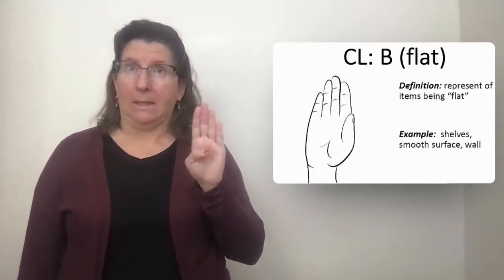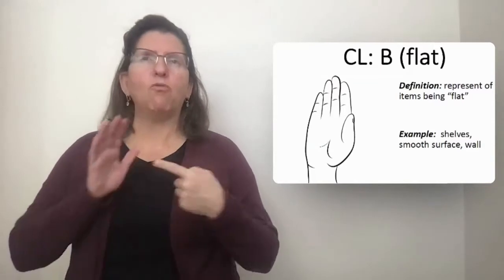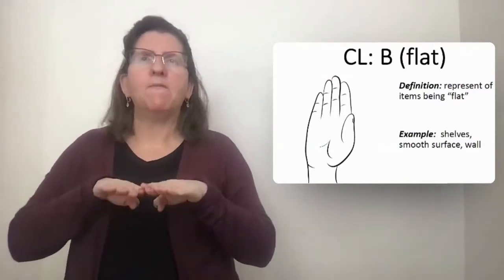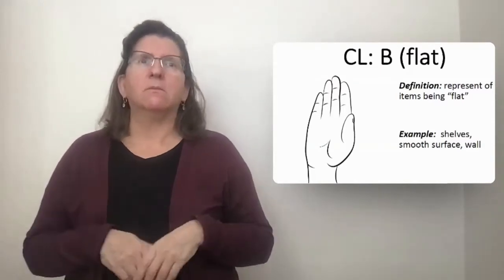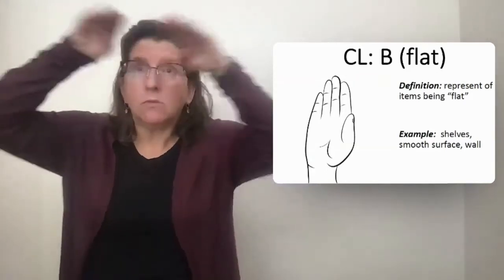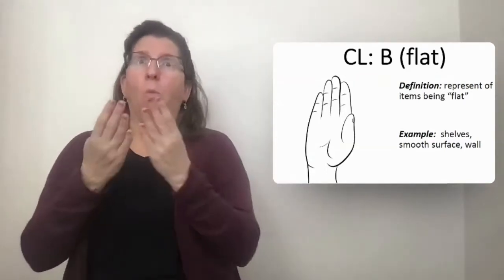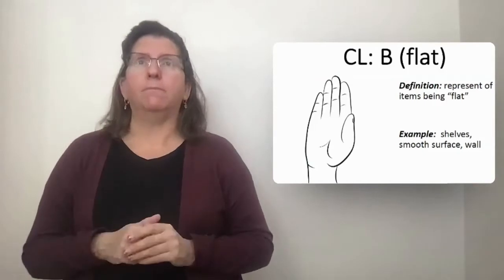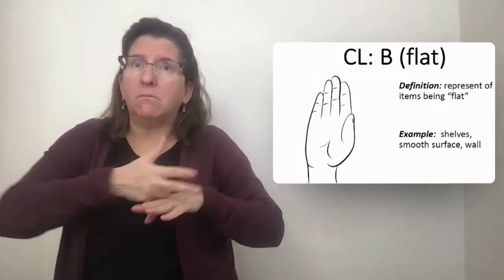Classifier B represents flat objects, shelves, or a wall. The road under a vehicle, in this case.